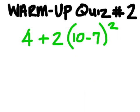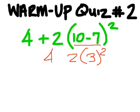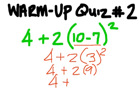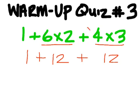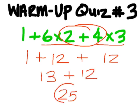Problem number 2. 10 minus 7 is 3. You have to square that to come up with a 9, and multiply it by 2 to get 18, plus 4 is 22. Problem number 3. For this problem, you must do 6 times 2 to get 12, and 4 times 3 to get 12 first. You cannot do 2 plus 4 at any time. So now go left to right to get 13 plus 12, and your answer is 25.